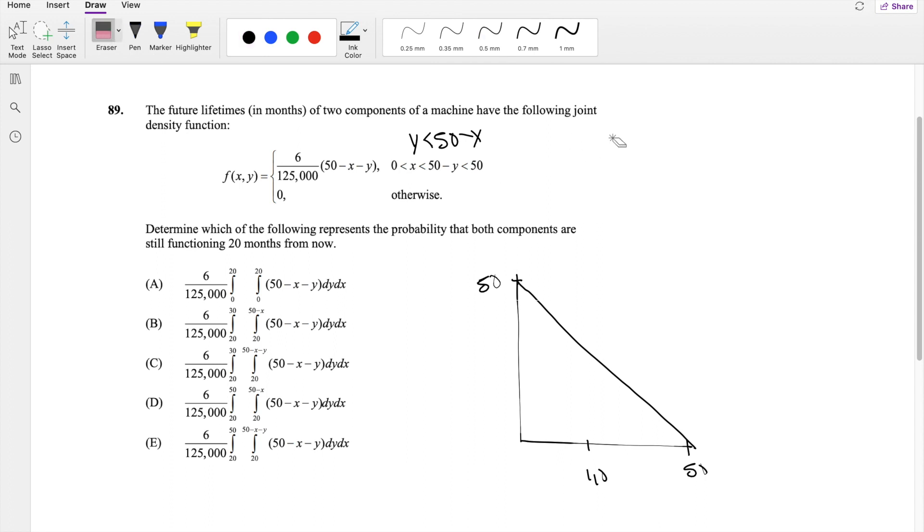And we're asked to find what is the probability that both of these components are functioning 20 months from now. So let's say in 20 months, like right here. We want both of them to be greater than 20. So this is 20, this is 20. It's going to be this line going from here to here. And we want it to be greater than 20 months, it's going to be this little triangle here.